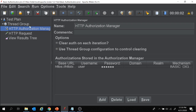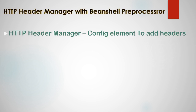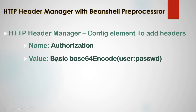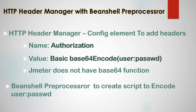Now we will look into another way to do basic authentication — using HTTP Header Manager with BeanShell preprocessor. The HTTP Header Manager is a config element used to add headers. To do basic authentication, we need to provide the name as 'Authorization' and the value as 'Basic' followed by a Base64-encoded username and password. Since JMeter does not have any Base64 function, we need to use BeanShell preprocessor to encode the username:password string.